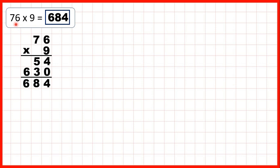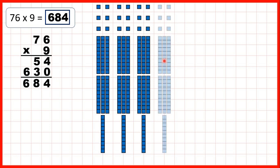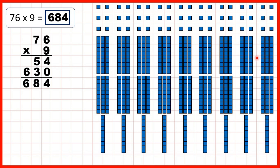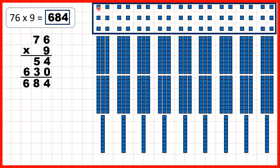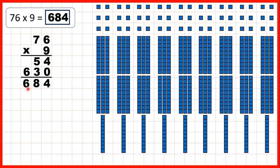Then we had 76 times 9. So we can show 76 as 7 tens and 6 ones, and we're multiplying by 9, so let's show that nine times. You can see that we have 54 ones blocks and we have 63 tens blocks. 63 tens is the same as 630. So altogether we have 684.